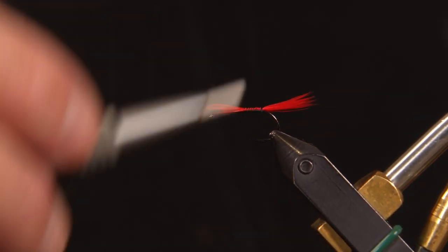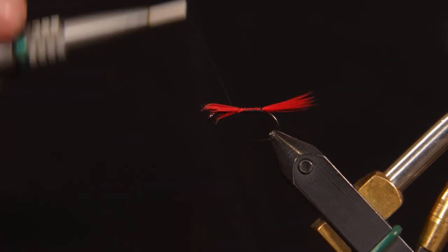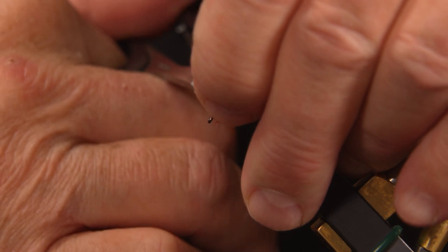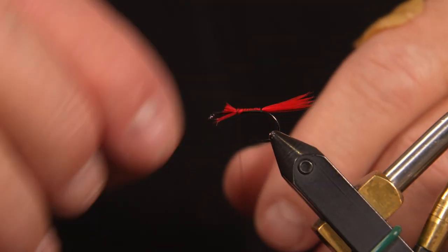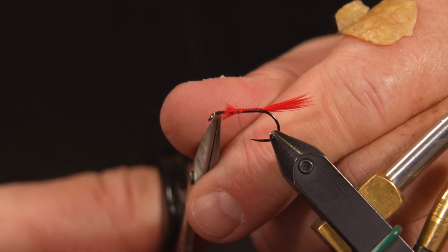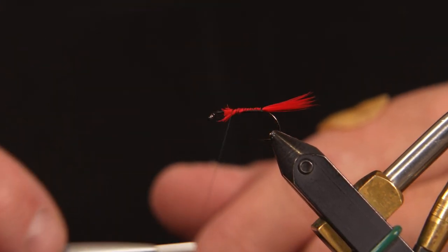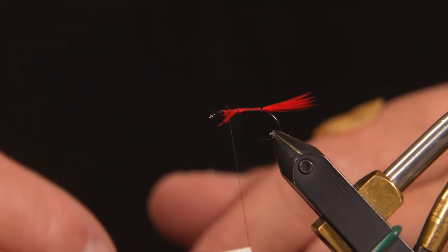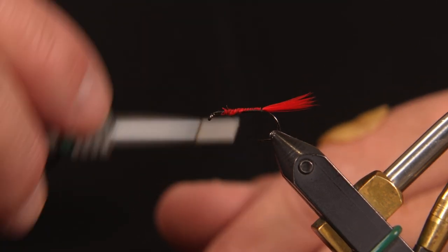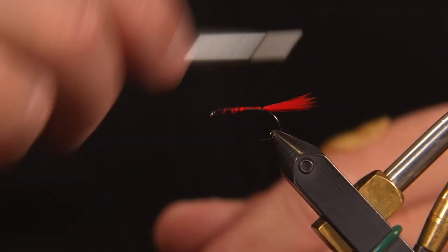Wrap my thread forward. And I like to take it all the way forward just behind where I want that, where I'm going to tie the hackle in. That way I have a nice even underbody. And there is in the recipe a sequence to tying this fly.